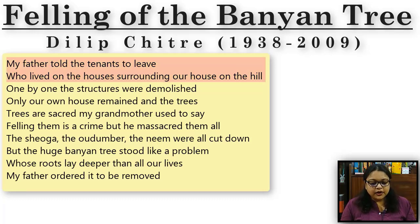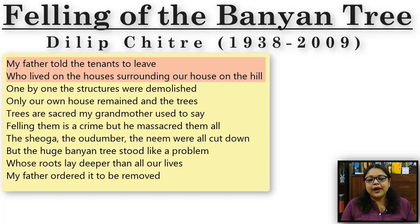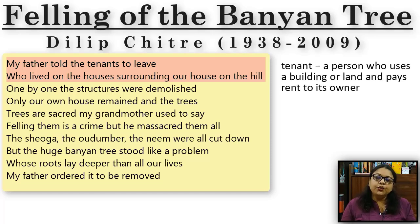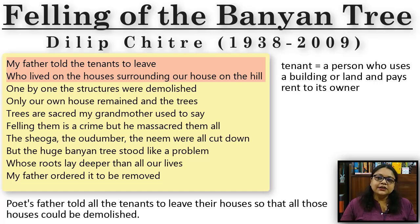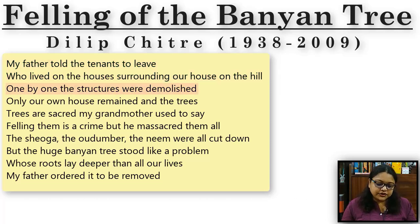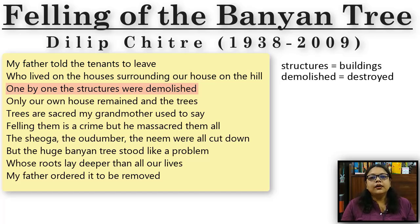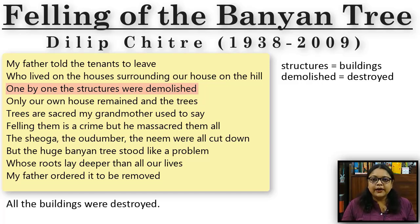The poem begins: 'My father told the tenants to leave who lived in the houses surrounding our house on the hill.' The poet is talking about his homeland where they used to have tenants as neighbors — people who pay for staying at your premises. His father had decided to demolish these buildings for some future plan and asked the tenants to leave. One by one the structures were demolished.